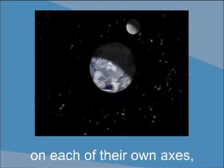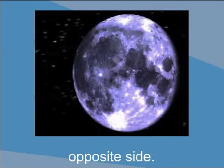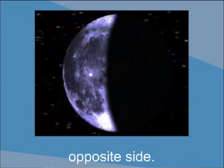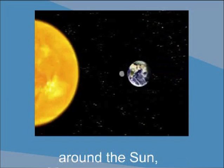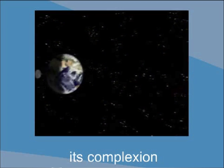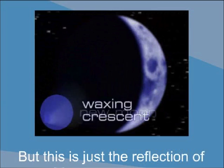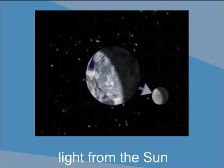...and the moon spin on each of their own axes, Earth never sees the moon's opposite side. As they revolve together around the sun, the moon appears to change its complexion. But this is just the reflection of light from the sun.